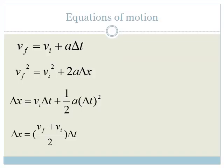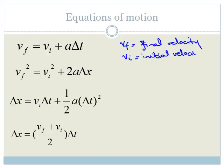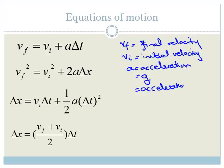So let's quickly revise the equations of motion. They will be on your formula sheets, but let's just go through it. First of all, you've got VF is equal to VI plus A delta T, where VF is the final velocity, VI is the initial velocity, A is acceleration. And in vertical projectile motion, acceleration is often written as G, because it stands for the acceleration due to gravity.